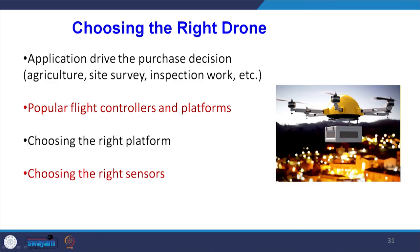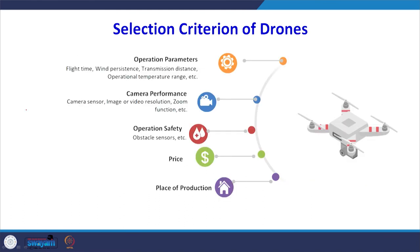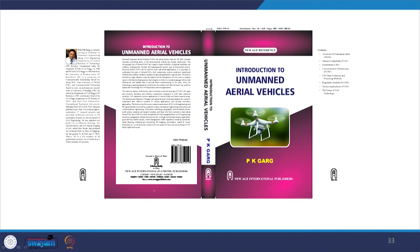The next part is how to choose the right kind of drone. Depending upon the specification and the application, you have to choose the right sensor, the right platform, popular flight controllers and platforms, and consider the application — whether for agriculture or inspection work. Parameters range from operational parameters to camera performance, operational safety, price, and place of production. All of this determines the selection criteria for the drone. Further details can be found in a book on UAV systems written by the lecturer.